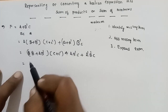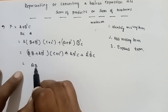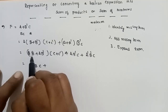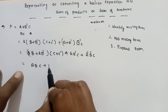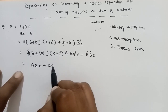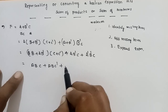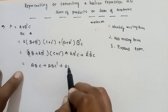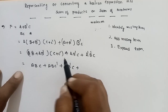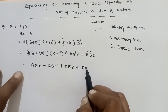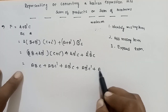Now again expand A, B, C: A, B into C — A, B, C dash plus A, B, C dash plus A, B dash into C — A, B dash, C dash, A, B dash, C dash.